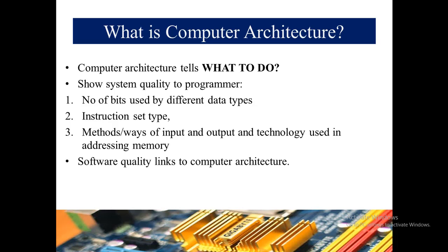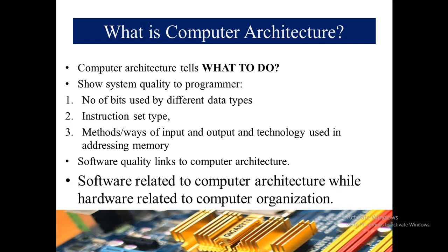Software quality is linked to computer architecture. In short, software is related to computer architecture while hardware is related to computer organization. When we talk about computer architecture, we are talking about the software used in the computer; when we talk about computer organization, we mean what type of hardware is used inside the computer.